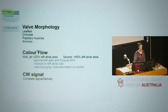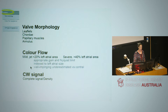With qualitative assessment, we're looking at a range of parameters: the valve morphology — leaflets and supporting structures, chordae, papillary muscles, and annulus. We're also looking at colour flow — how big the regurgitation jet is relative to the left atrium — and we'll also look at the continuous wave Doppler signal.